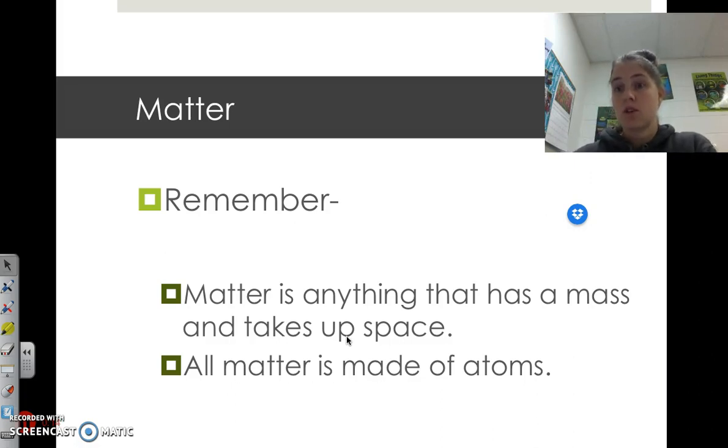And remember, atoms are those little things that have three parts: the protons, neutrons, and electrons. And each of those protons, neutrons, and electrons are made up of quarks, and it continually gets smaller and smaller. But for the purposes of chemistry, we are going to say that all matter is made up of atoms, and we're going to leave it at that.